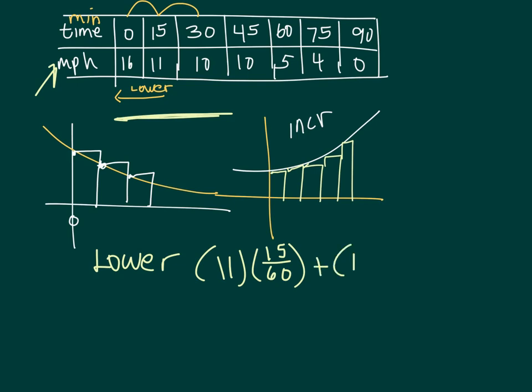So in this case a lower, again based by looking at the graph that it's decreasing, I would actually start one value over. So I'm actually starting here, one value over. And so then the upper in this case would start at your first value, 16 times 15 over 60, and then your next one, 11 times 15 over 60.